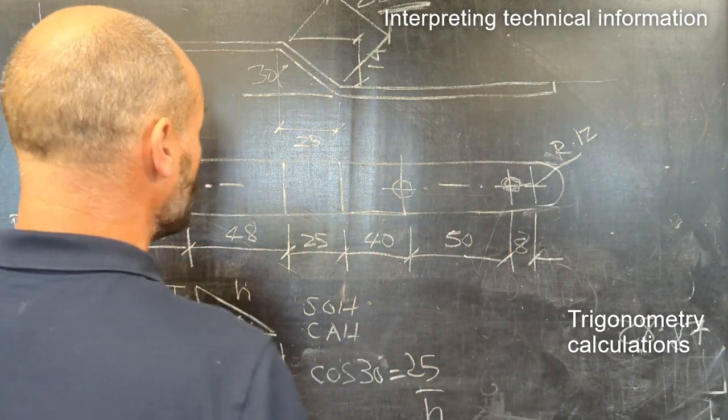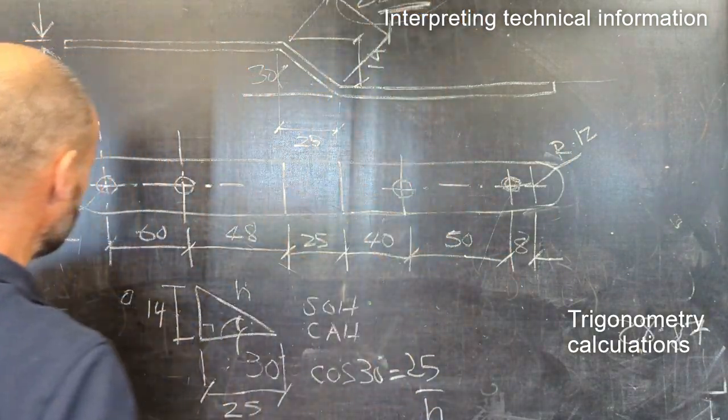When you flatten that bar out, you're going to have to do some rounding up with this number involved as well.